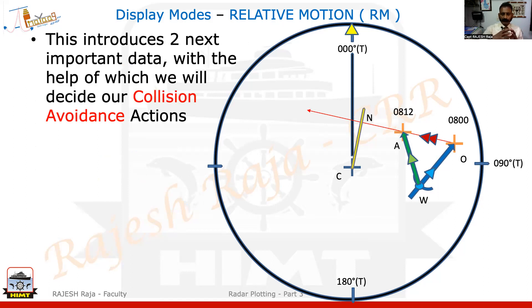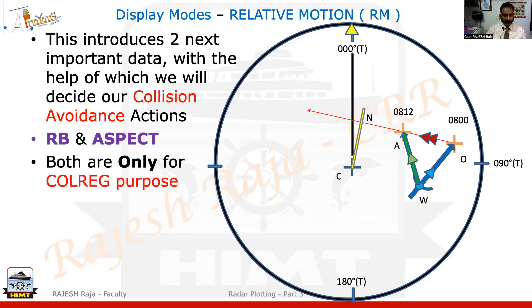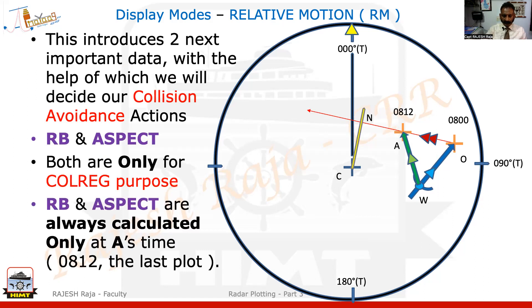This introduces us to the next two important data for collision avoidance, called RBN aspect. Different names exist for these. I'll brief you on this on the next video — my next video will continue on RBN aspect. When I do RBN aspect, I will finish the whole reporting. Your RBN aspect, both are only for COLREGS purpose, and they are always calculated once the first triangle is complete and we get to point A.